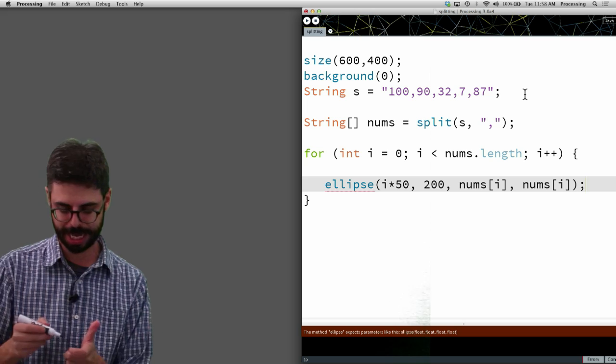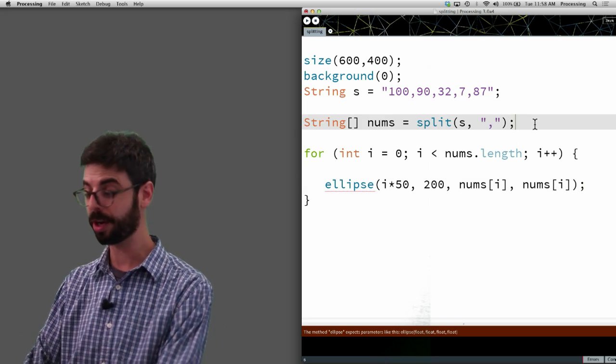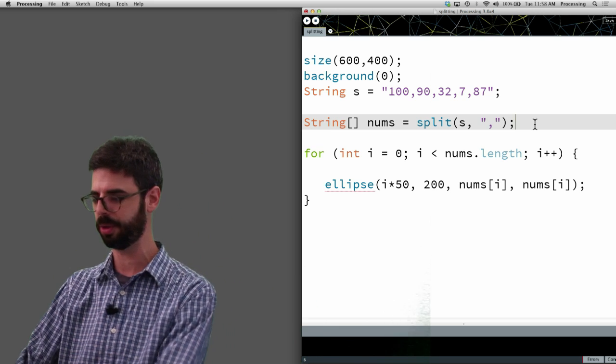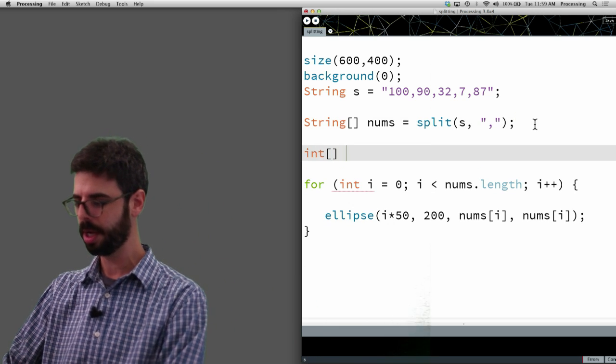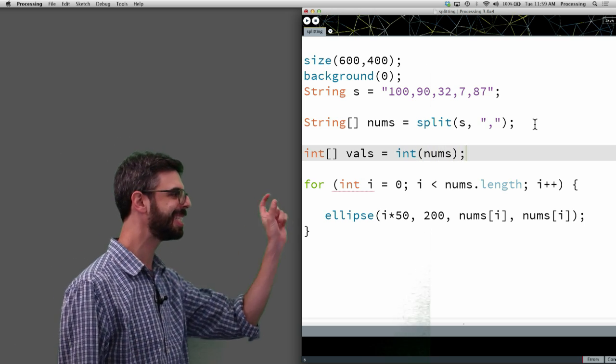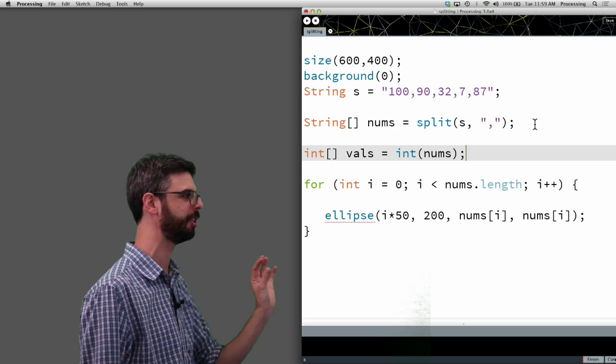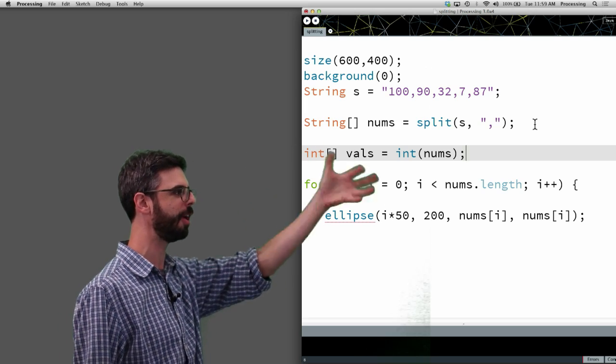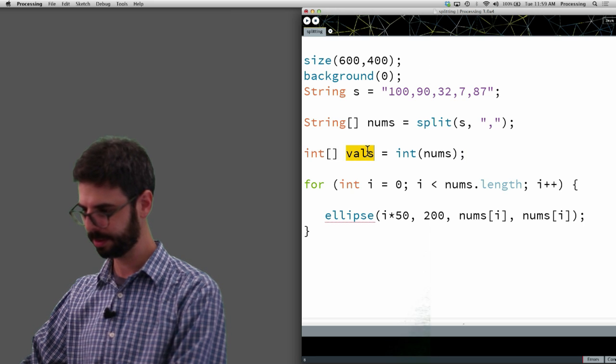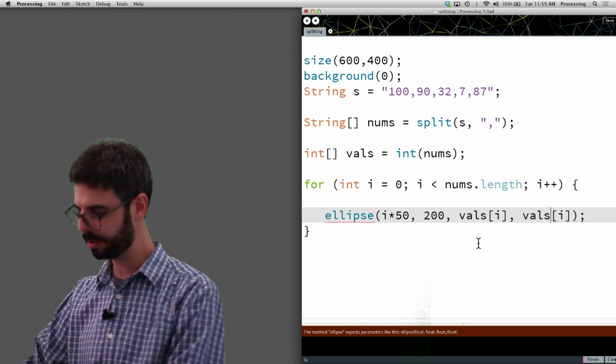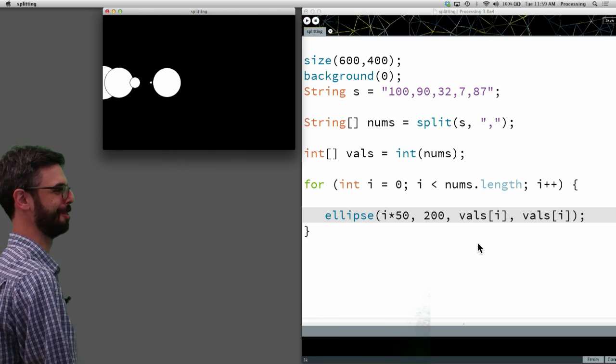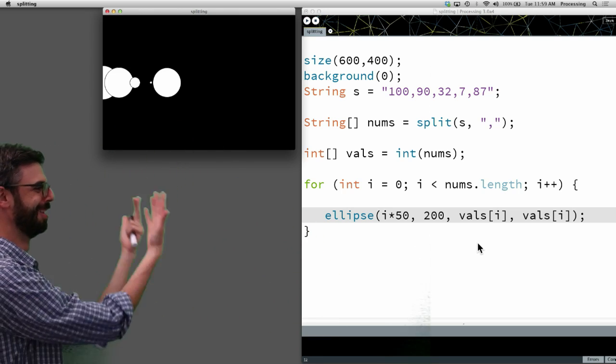And a really quick and easy way to convert an individual value or an array of strings into a value, a number, would be, I'm just going to change this to vals, is using the int function. So this is like casting, I'm casting all these strings into integers. And it's a function that's converting that array into integers. So now, here we go. And now, as you can see, I have my beautiful, perfect, I've never made such a wonderful data visualization ever. I'm so pleased.